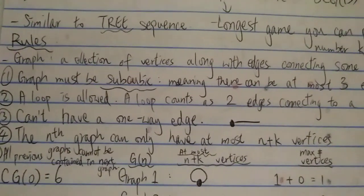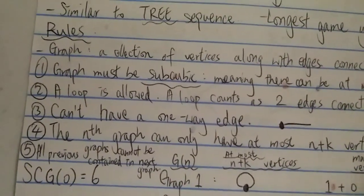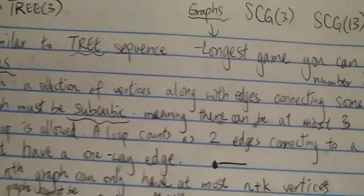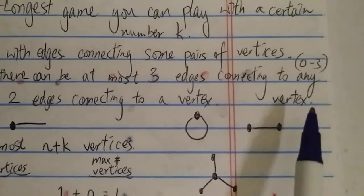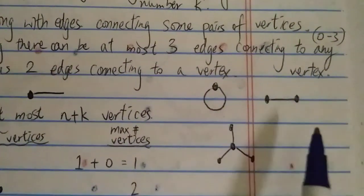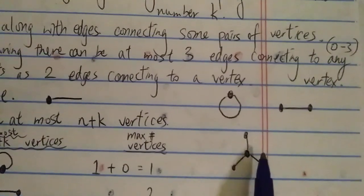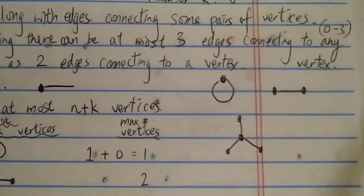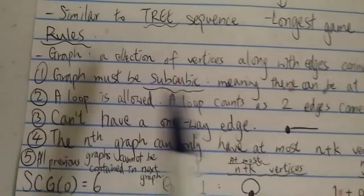Now let's look at some of the rules for this game. It's quite similar to the TREE sequence but not the same. The first rule is that the graph must be subcubic, as suggested by the name. Subcubic means there can be at most three edges connecting to any vertex. So one, two, three — you cannot have four or five or more. You can only have at most three edges.